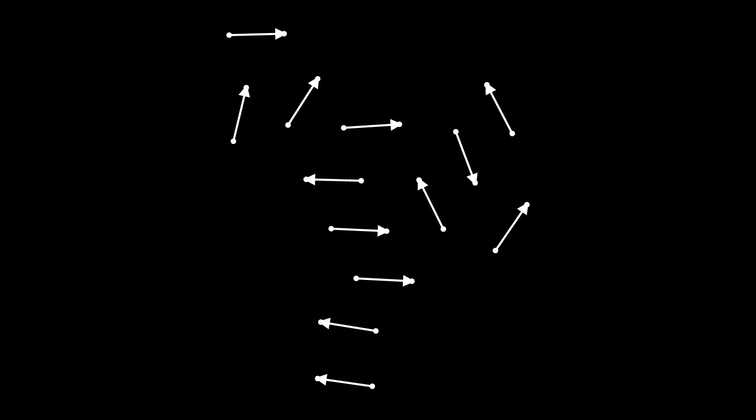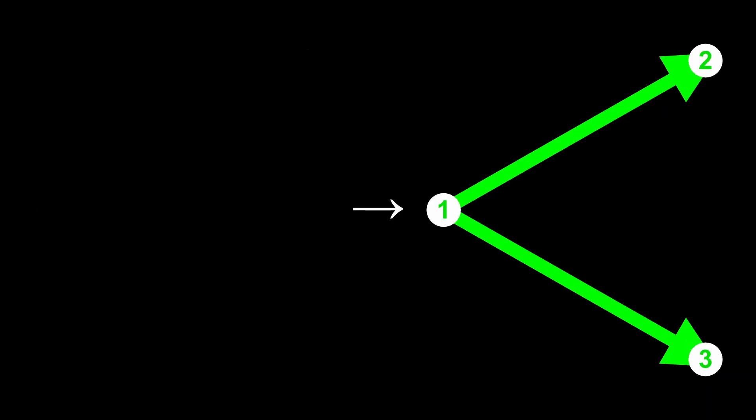It's true that our something-from-nothing rule doesn't create a very interesting universe. Apply it once and it creates one new edge; apply it many times and it creates many new edges — but these edges are completely disconnected. Each is, in effect, its own separate, lonely universe. But what if we were able to apply one rule to create something simple from nothing, and another rule to turn that something simple into something complex? For example, what if we applied this rule to create two edges from the same node, and then this rule to evolve those two edges into a complex universe?